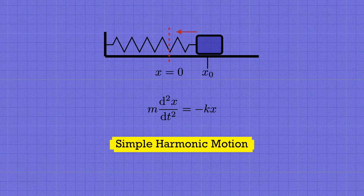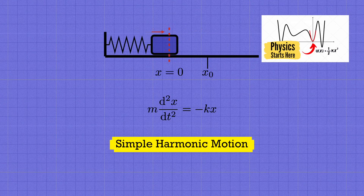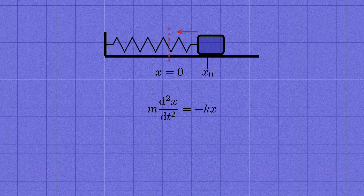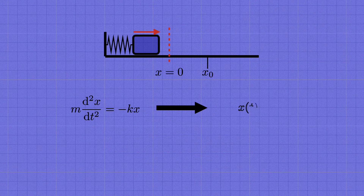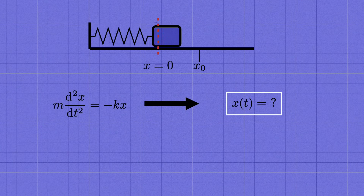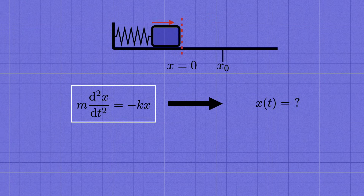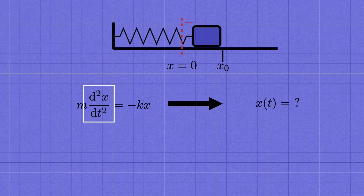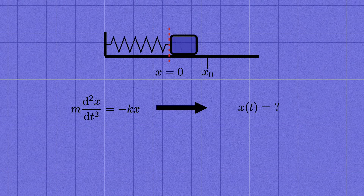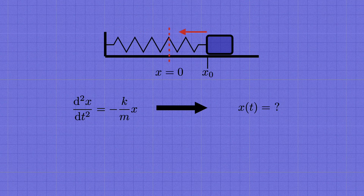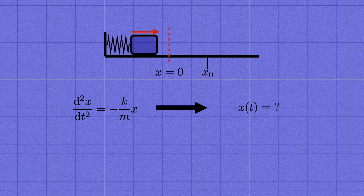Now let's say we pull the block out to an initial position x sub zero and then release it from rest. The stretched spring pulls the block back toward equilibrium; then the block overshoots x equals zero and moves to the left. The spring gets compressed and pushes the block back toward the right, making the block oscillate back and forth around equilibrium forever — this is simple harmonic motion. We're looking for x of t, the position of the block as a function of time. The differential equation says that the second derivative of x with respect to t equals minus k over m times x.